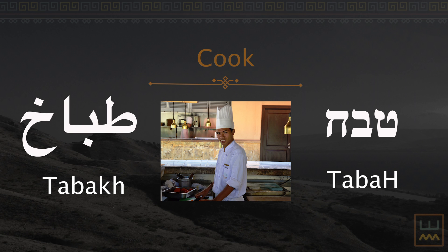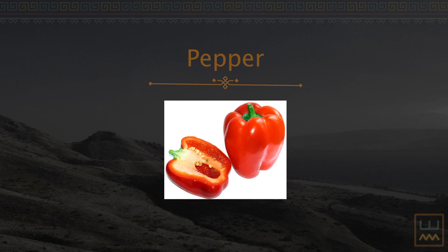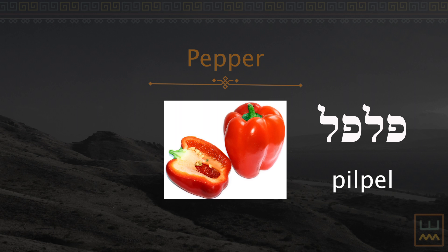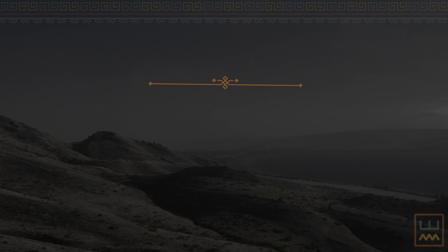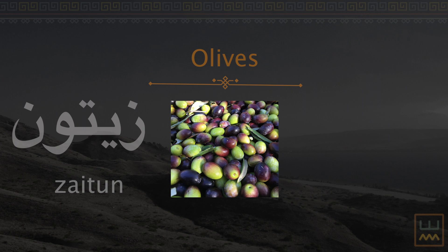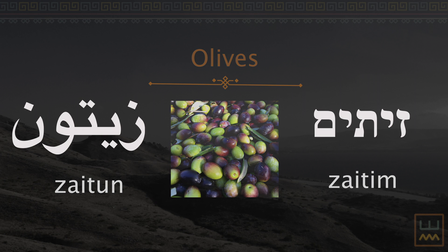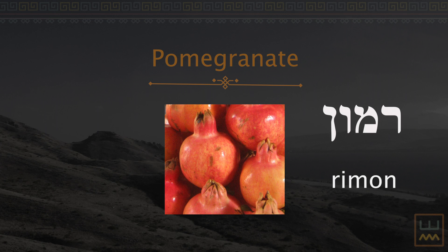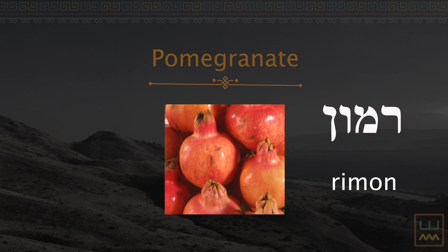Pepper: Pilpel (Hebrew), filfel (Arabic). Olives: Zeytim (Hebrew), zeytun (Arabic). Pomegranate: Ramon (Hebrew), ruman (Arabic).